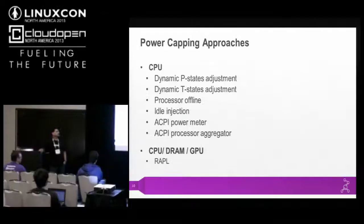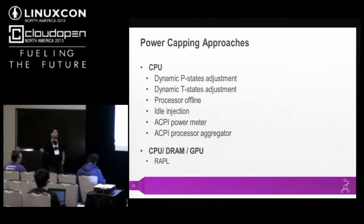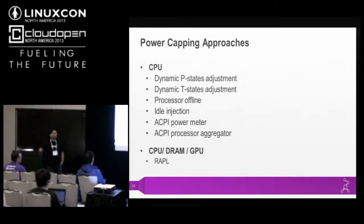How do you power cap the CPUs? You can adjust P states, adjust T states, do processor off-lining, inject idle time, and there is an ACPI power meter — already used in many places — and the ACPI processor aggregator. For CPUs, DRAMs, and GPUs there is one method introduced by Intel called RAPL — Running Average Power Limit. Also, using Intel I-9515, you can do P states in GPU as well.